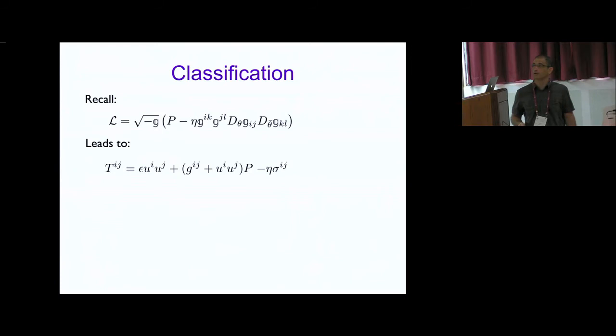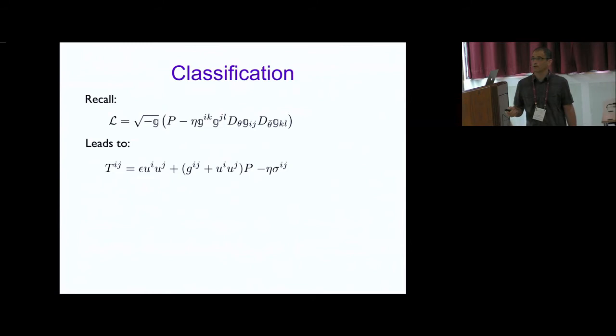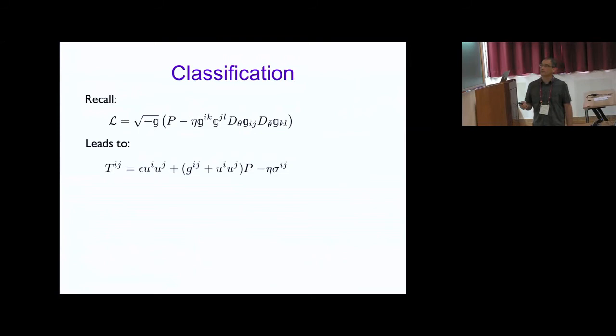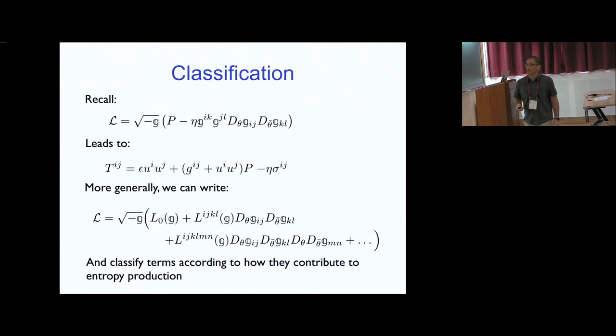In the five minutes I have left, let me show how we get things that go beyond the entropy current. The simple Lagrangian I showed leads to a fluid with a specific energy-momentum tensor structure. One can show the shear viscosity must be positive because the divergence of entropy is positive — η is dissipative because it contributes to entropy production. The pressure term is non-dissipative: it contributes to the entropy density part of the entropy current but not to the right-hand side of the entropy production equation.